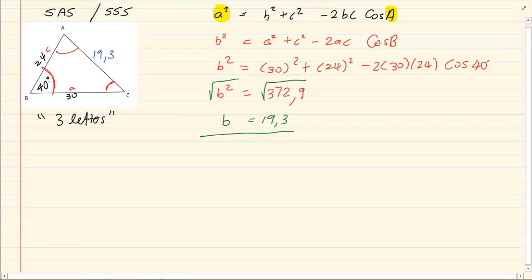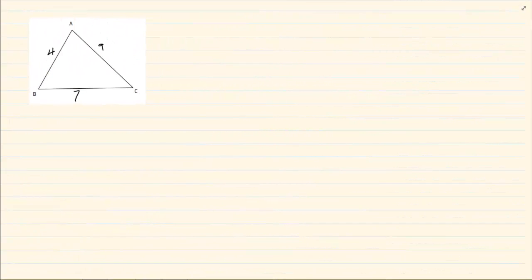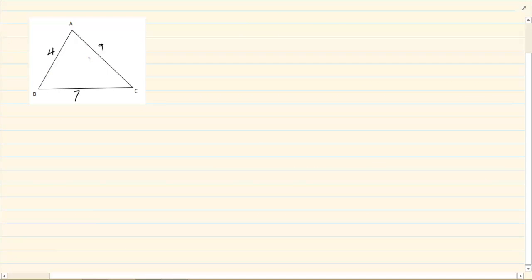Now let's do another example. Now this example, what they have done is they only given us the three sides. How do I go about calculating an angle? Let's say I want angle a. So I know I must end up with cos a. So it's going to be a squared is equal to b squared plus c squared minus 2bc cos a.